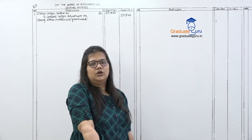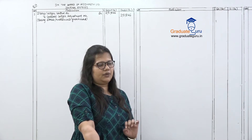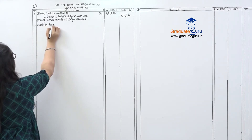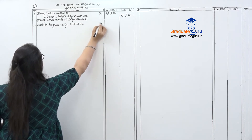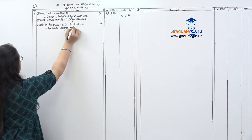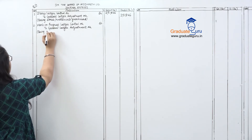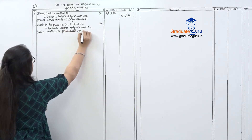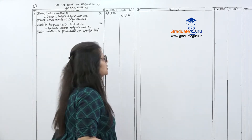Next, they are saying purchase against a specific job. The previous transaction was for stores; this purchase is for a specific job, which means Work in Progress. Journal entry: Work in Progress Ledger Control Account debit, to General Ledger Adjustment Account. The amount is 28,402.